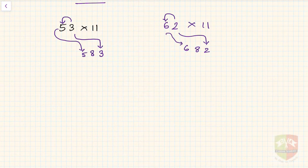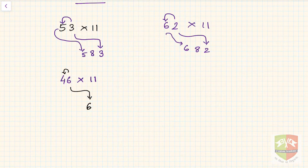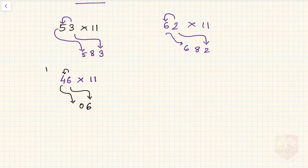Now let's try 46 into 11, which has a slight difference. You start as usual and write 6 on the right, but when you add 6 plus 4 you get 10. You can't have two digits there, so you write 0 and carry 1. Since there is a carry of 1, you add 4 plus 1 and write 5. So the answer is 506.